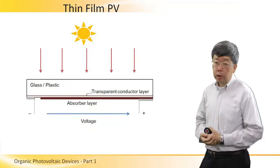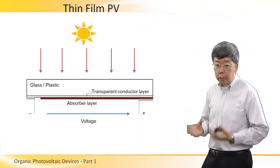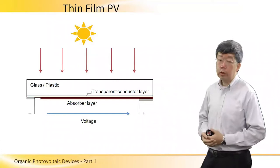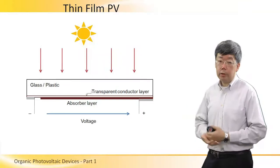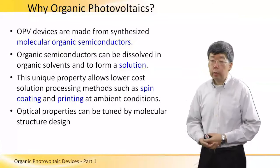When light shines onto the thin-film PV device, the device will behave like a battery. You will get a voltage across the two terminals, and current can flow if you connect a load such as a resistor between the two terminals.